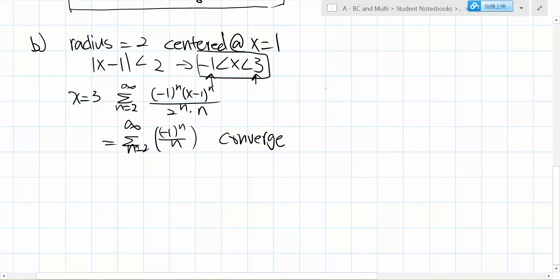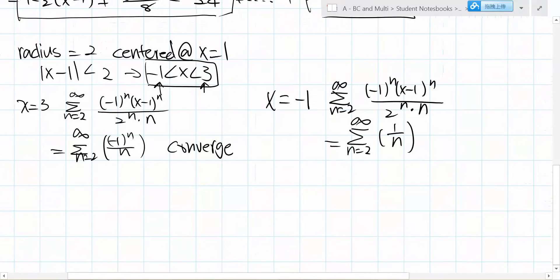Now let's test when x equals -1. From this, we can see this is an alternating series, so it definitely diverges. Therefore, we've proven that the interval of convergence is -1 < x < 3.